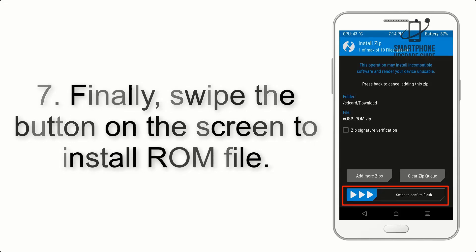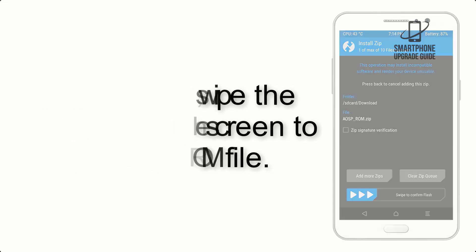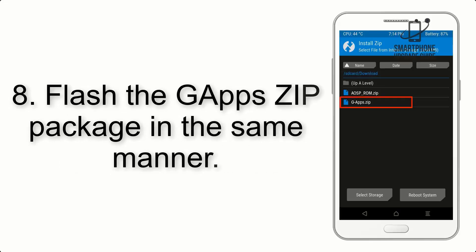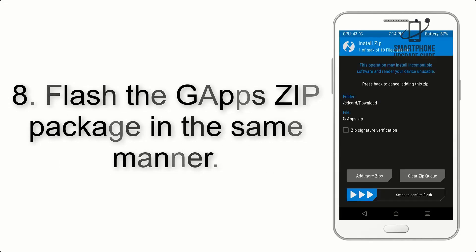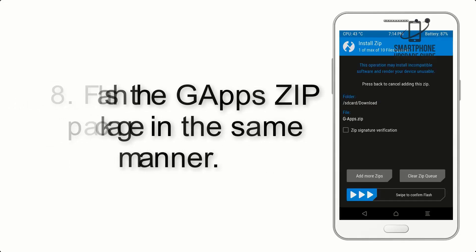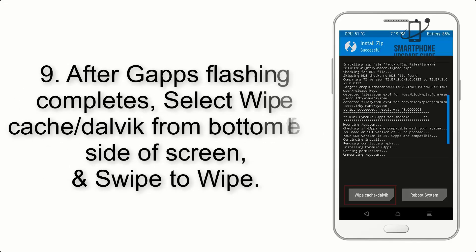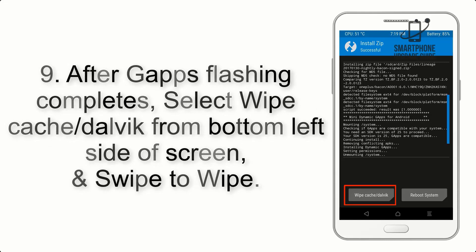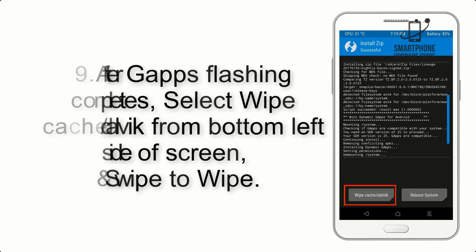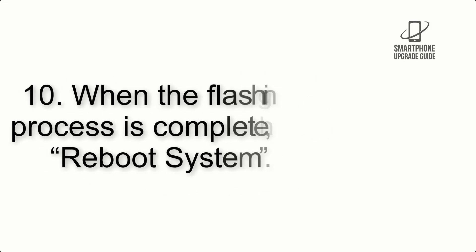Step 7: Swipe the button on the screen to install the ROM file. Step 8: Flash the GApps zip package in the same manner. Step 9: After GApps flashing completes, select Wipe Cache and Dalvik from the bottom left side of the screen and swipe to wipe.